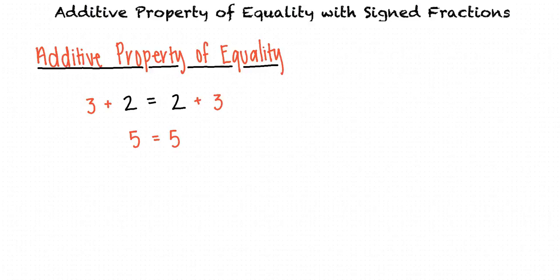This property is useful when trying to solve for a variable that has a constant being subtracted from it. So, for example, to solve x minus 5 equals 6, the Additive Property of Equality lets us add 5 to both sides, resulting in 5 plus x minus 5 equals 6 plus 5, which we can then simplify to x equals 11.